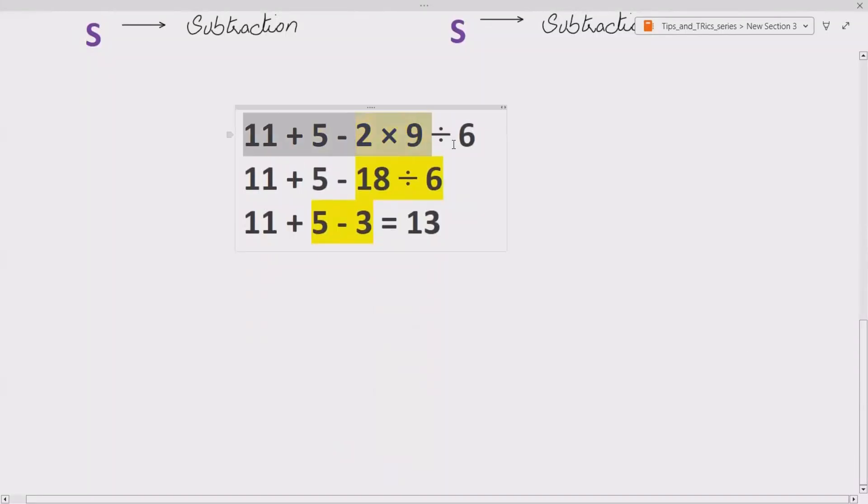Now let's see how we can solve our expression using this rule. We are given 11 + 5 - 2 × 9 ÷ 6. There are no brackets or powers, so we don't need to worry about them. We have multiplication; according to BODMAS or PEMDAS, we have to do it first: 2 × 9 = 18.